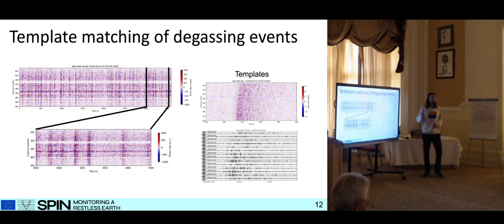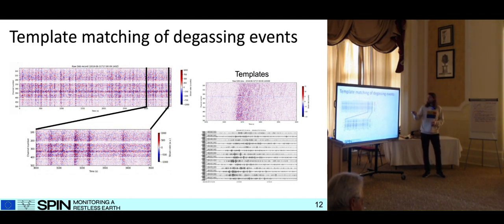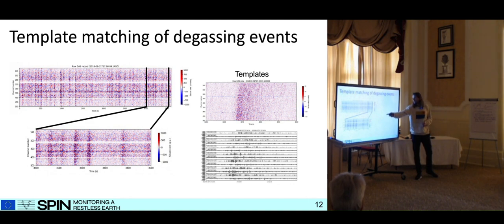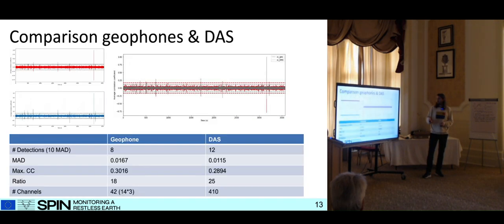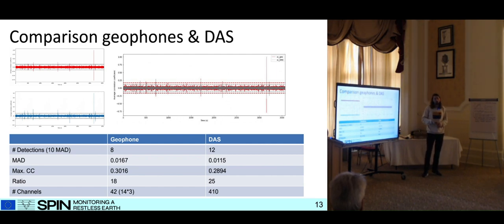I also did template matching in the time domain, because while this clustering worked extremely well for volcanic explosions, for the tremor it just doesn't work well — it's very messy. Maybe it's because the tremor comes from a larger area or a patch, so it's not straightforward to find it with this method. Using template matching in the time domain, I took one of these events as a template and scanned it, comparing both geophone and DAS. Basically, with the DAS, since we have so many more channels, we have a lower standard deviation and can detect more events above the threshold.